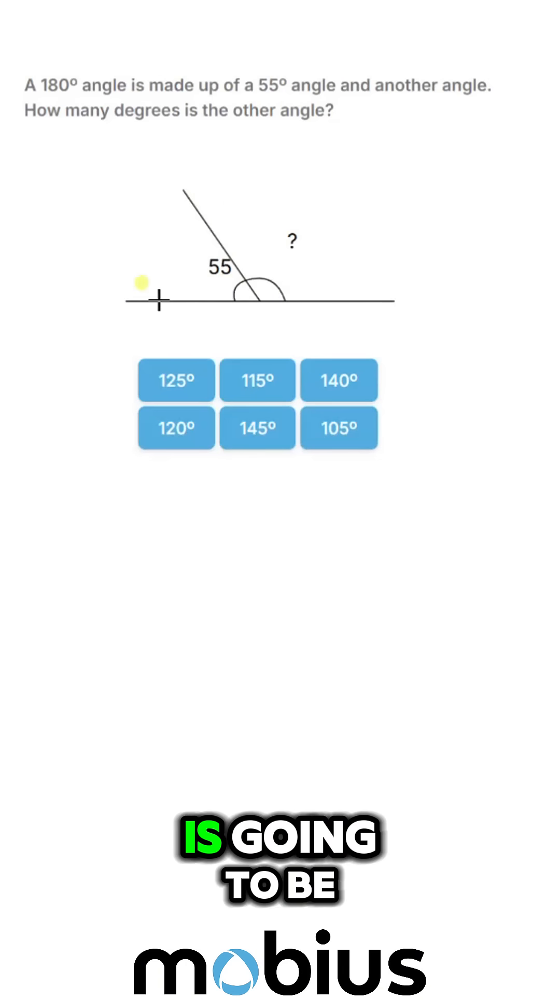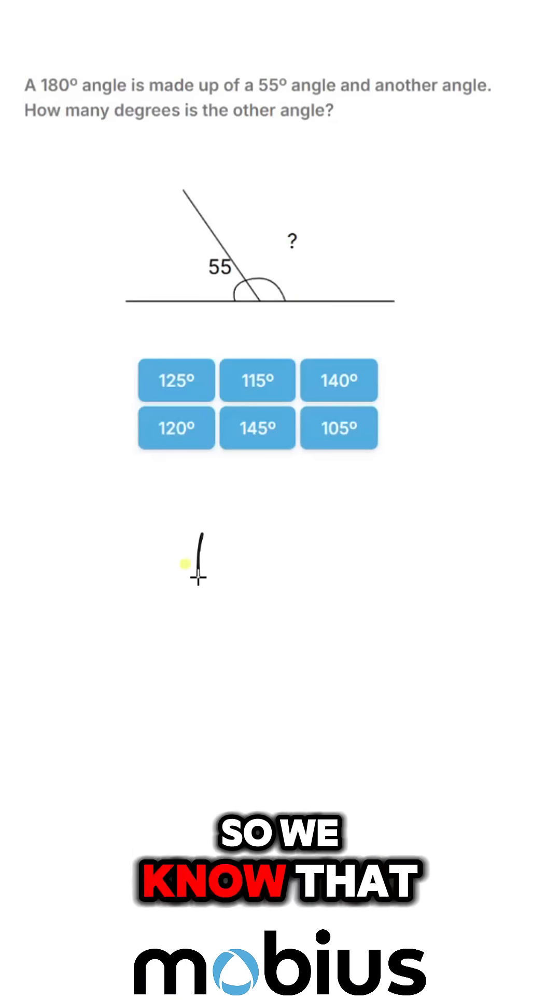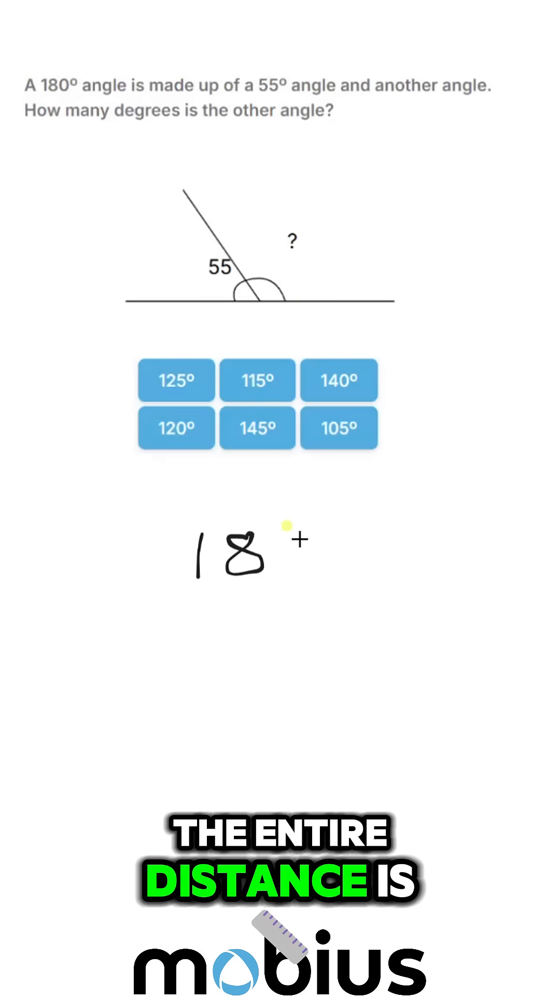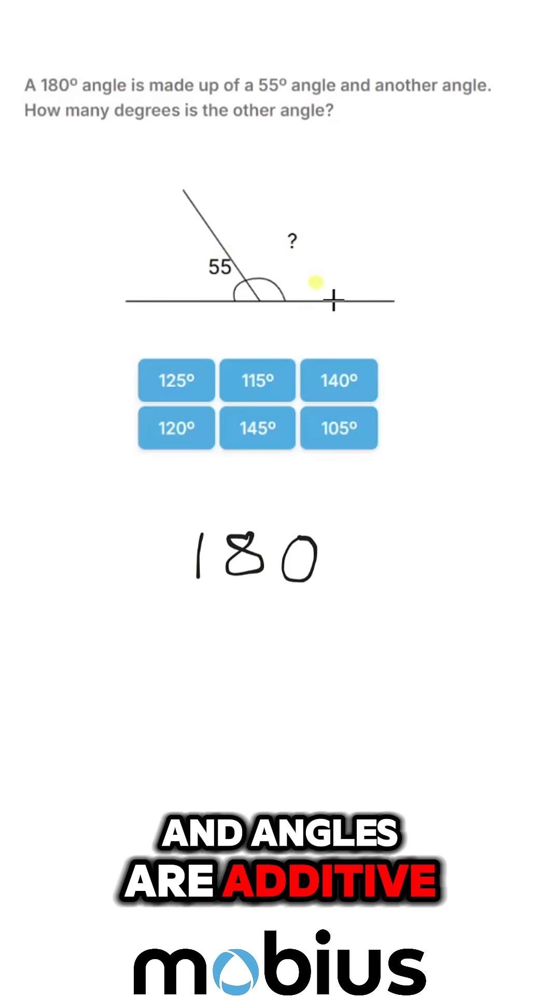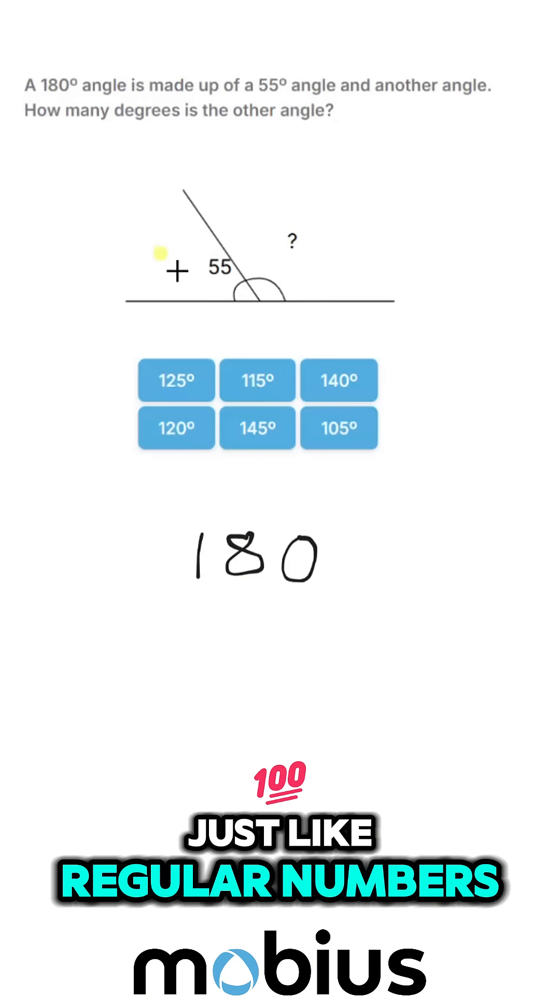So a straight line is going to be 180 degrees, so we know that the entire distance is 180 degrees. And angles are additive, just like regular numbers.